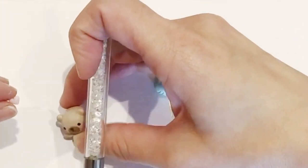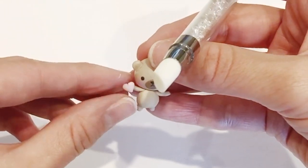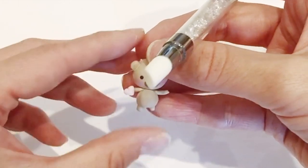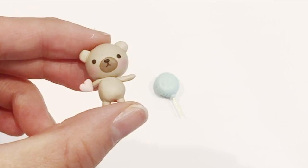And bake all of your pieces in the oven for at least 20 minutes at 250 degrees Fahrenheit. And all of your clay pieces should come out really hard and ready to use and put together.